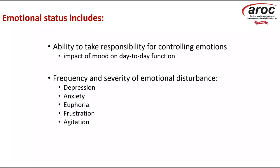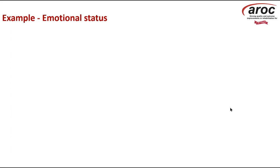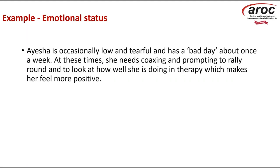Looking at emotional status — this is the ability to take responsibility for controlling emotions, looking at the impact of mood on day-to-day function, and the frequency and severity of emotional disturbance such as depression, anxiety, euphoria, frustration, and agitation. For example, Asia is occasionally low and tearful, having a bad day about once a week. At these times she needs coaxing and prompting to rally around and look at how well she's doing in therapy, which makes her feel more positive. Her score is a four — she required help once a week or less often. All scores and definitions are in the manual.